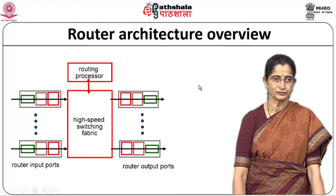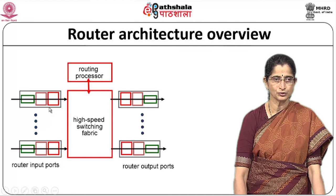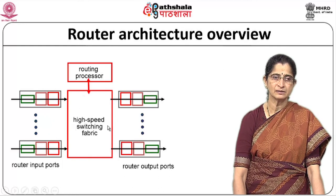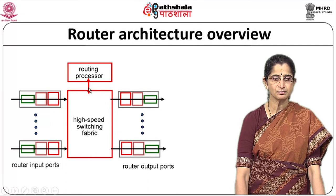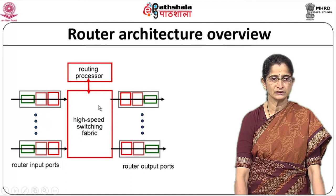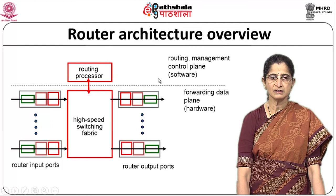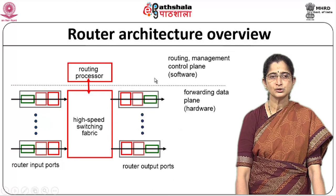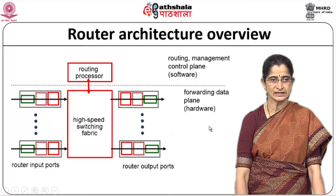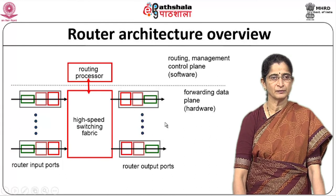Looking at the overview of a router architecture, it typically has a set of input ports and a set of output ports, with a high-speed switching fabric connecting the inputs with the outputs. There is also a routing processor responsible for setting up the switching fabric — how packets are switched from one input port to an output port. The functions are split into two planes: the control plane and the forwarding or data plane. Routing management comes under the control plane and is typically handled by software, while the fast switching is the forwarding or data plane, normally done in hardware.